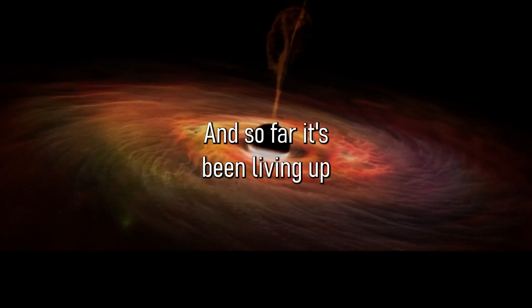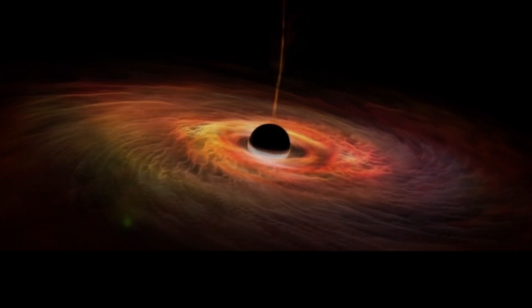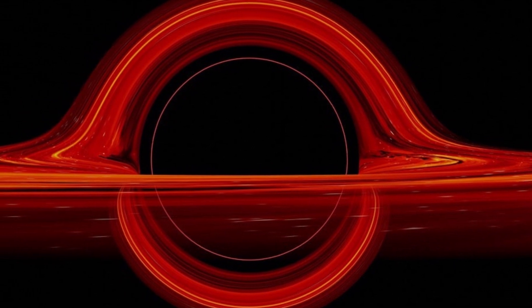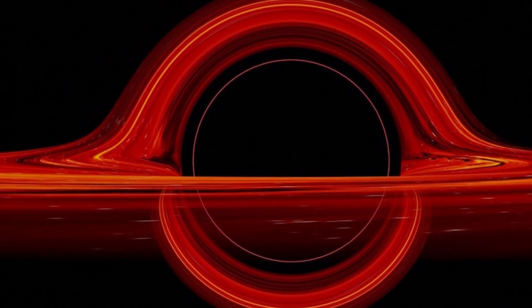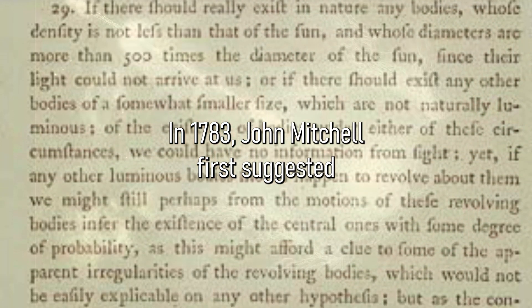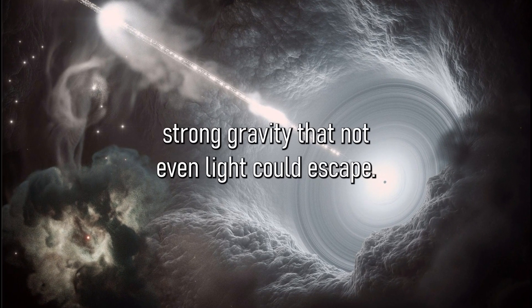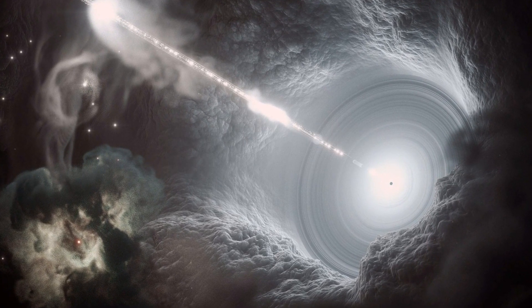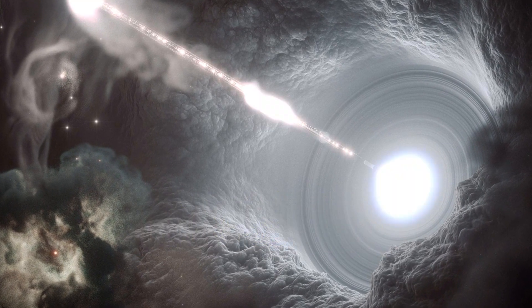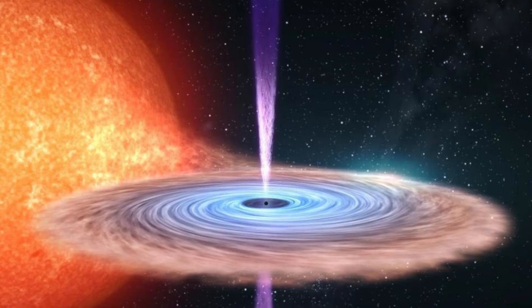And so far, it's been living up to expectations. The history of the discovery of black holes has been filled with so many uncertainties, with scientists drawing up theories on what they really think these things are. In 1783, John Mitchell first suggested that there could be occurrences with such strong gravity that not even light could escape. And also, in 1916, Albert Einstein's general theory of relativity pointed to the existence of black holes.